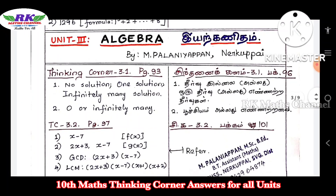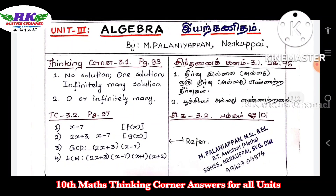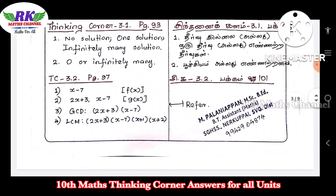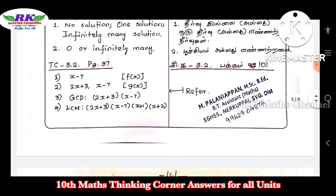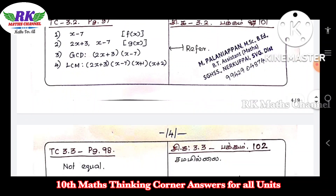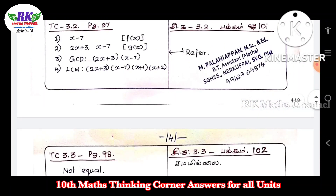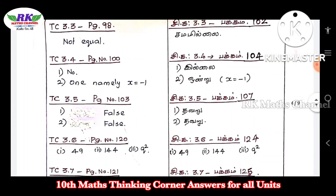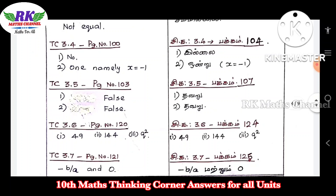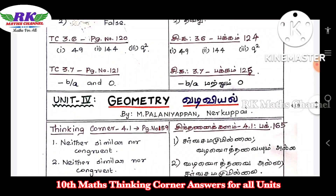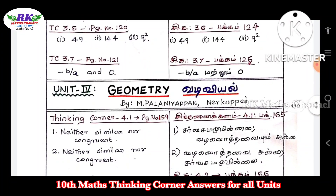Next, Algebra — the third chapter. Page number 93, page number 97, page number 98, page number 100, 103, page number 120, and page number 121. There are answers for many questions in this chapter.